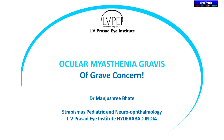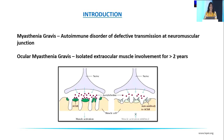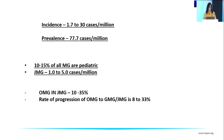Thank you, AIOC and chairpersons. Ocular myasthenia gravis is of grave concern — it's a diagnosis of exclusion and we need to rule out sinister causes before starting treatment. It is an autoimmune disorder of defective transmission at the neuromuscular junction; ocular myasthenia gravis is isolated extraocular muscle involvement for ≥2 years. The incidence is 1.7–30 cases per million and prevalence is 77.7 cases per million (US data). Of all myasthenia gravis cases, 10–15% are pediatric; juvenile myasthenia is 1–5%. Ocular myasthenia in juveniles is 10–35%, and progression to generalized myasthenia in juveniles is 8–33%.